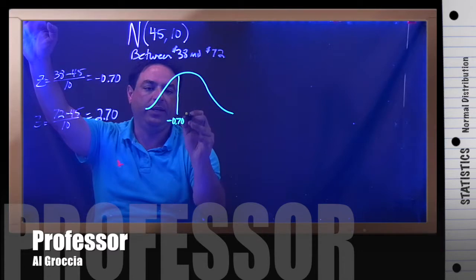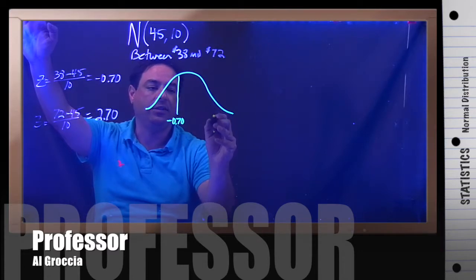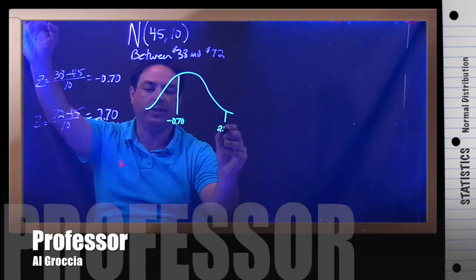And then again, zero would be here. 2.7 would be about here, 2.70.